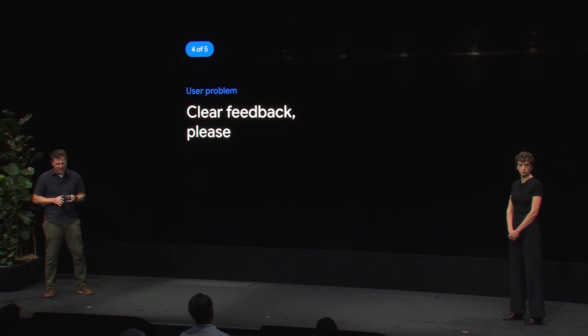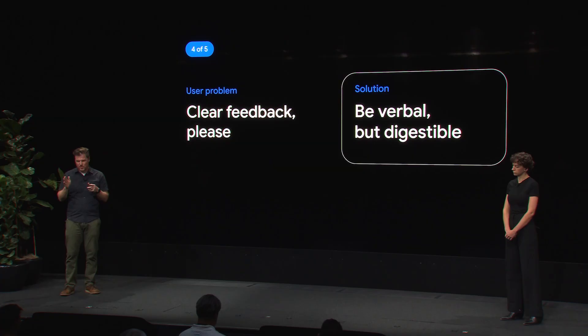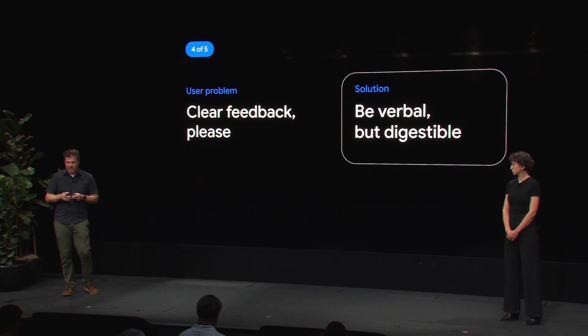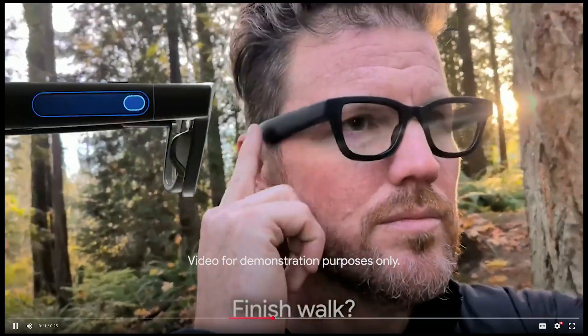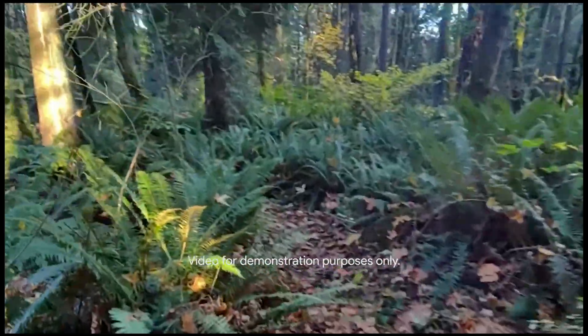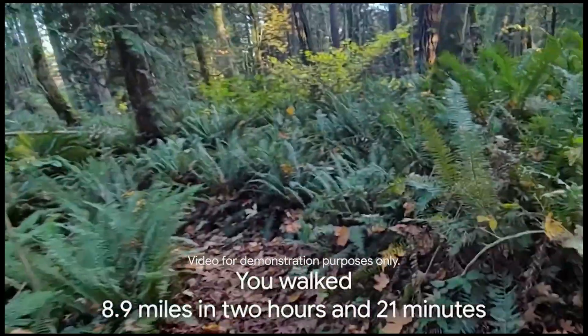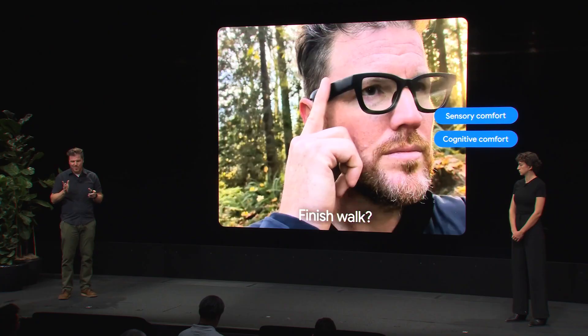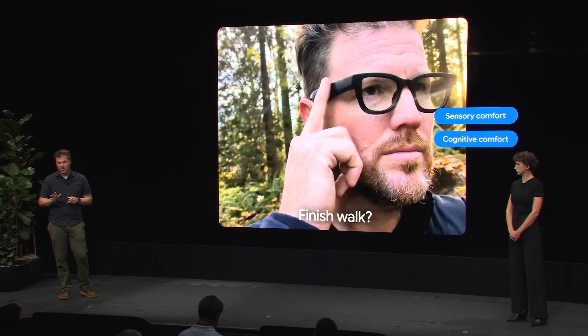Now on providing clarity: vague, ambiguous audio signals like generic chimes or beeps can be hard to distinguish and remember. On the other hand, too much verbal feedback can be overwhelming. So be verbal but digestible — use clear, concise verbal confirmation instead of or in addition to nonverbal audio feedback. Readouts must be short and purposeful to prevent cognitive and sensory overload. For example, after ending a walk, the app reads out: 'Walk ended. You walked 8.9 miles in two hours and 21 minutes.' We recommend short confirmation messages when tapping or swiping. A confirmation step before ending irreversible actions can also help.